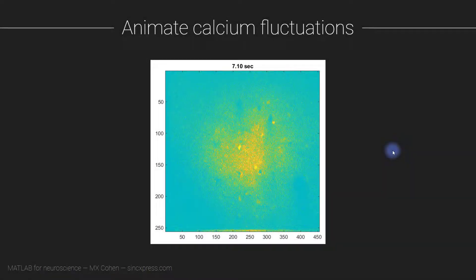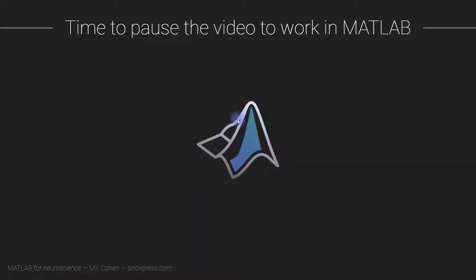The goal of this video is to import the data and then make an animation of the first 15 seconds. Here you see one frame of that animation — this frame comes from around seven seconds into the movie. These are the raw unprocessed images; I will have more to say about the raw data in a later video, but now we are going to focus on producing an animation. You should pause the video now to work through the partially completed MATLAB code on your own, and when you're finished you can come back to see my explanation.